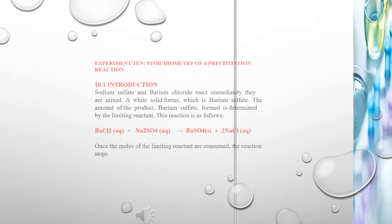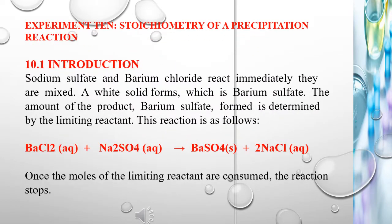Stoichiometry of a Precipitation Reaction. Introduction: Sodium Sulfate and Barium Chloride react immediately when they are mixed. A white solid forms, which is Barium Sulfate. The amount of product formed is determined by the limiting reactant. This reaction is as follows.